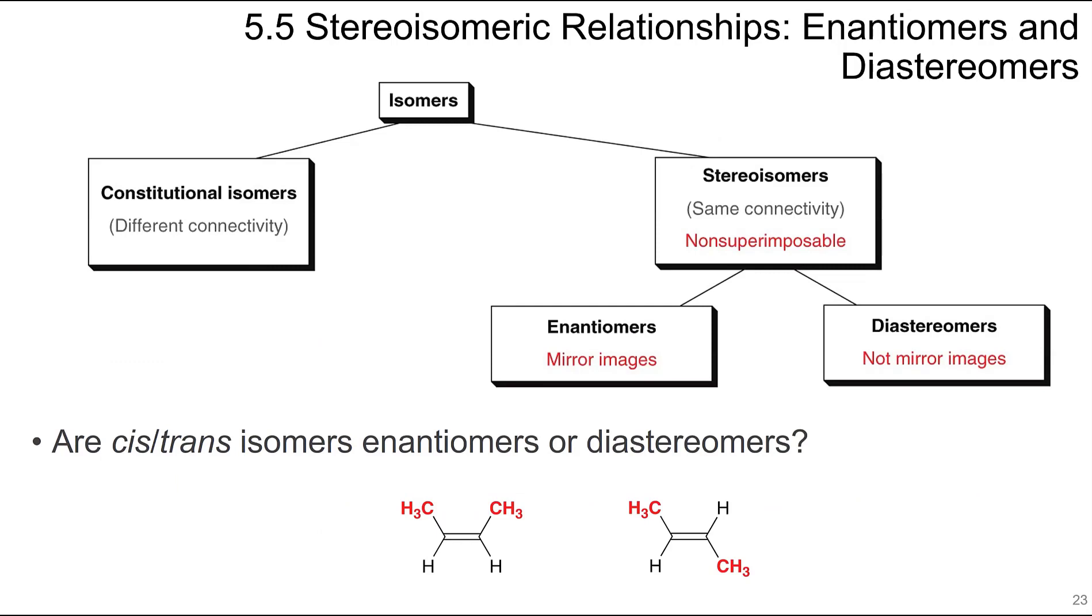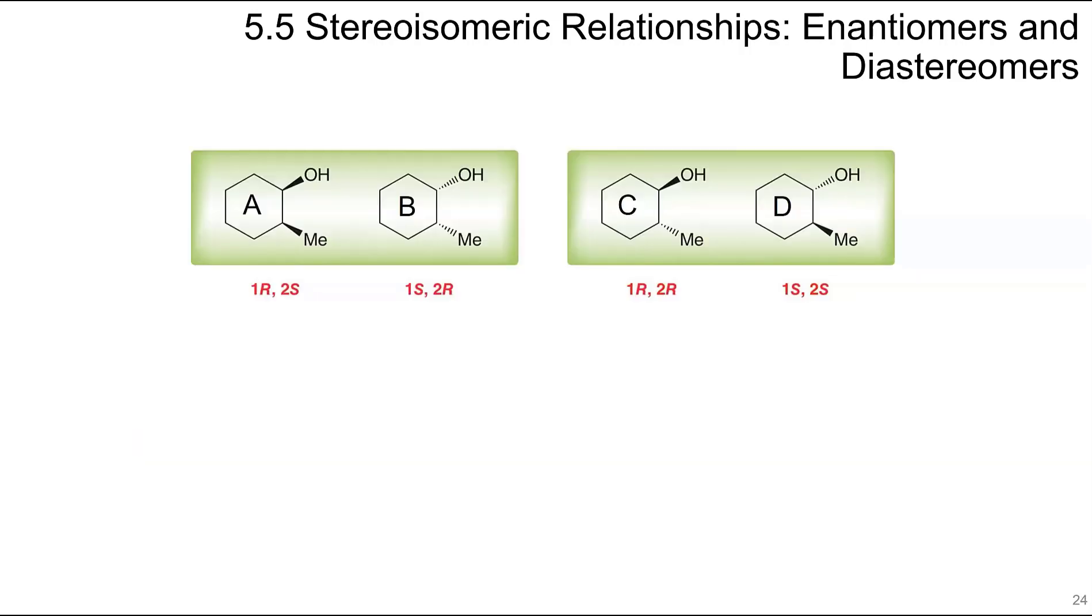Other relationships we'll encounter are diastereomers. We can have isomers and constitutional isomers, which have different connectivity. Stereoisomers have the same connectivity and are non-superimposable. We have enantiomers, which are mirror images of each other, and then diastereomers, which are not mirror images. This is a cis double bond, this is trans. Are these enantiomers or diastereomers? These ones happen to fall into the diastereomer category.